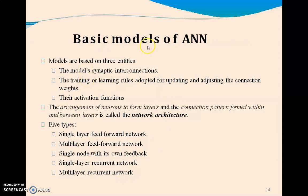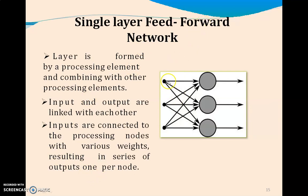There are some basic models of ANNs. Instead of representing the complexity in ANNs, we simplify those models into five groups. The model's synaptic interconnections differentiate each one. Training or learning groups are adopted for updating and adjusting the connection weights. The arrangements of neurons form layers, and interconnection patterns are formed within and between layers. There are five types: single-layer feedforward, multi-layer feedforward, single node with its own feedback, single-layer recurrent, and multi-layer recurrent. This is single-layer feedforward: only input and output. Layers are combined with other processing elements. Input and output links are linked to each other.